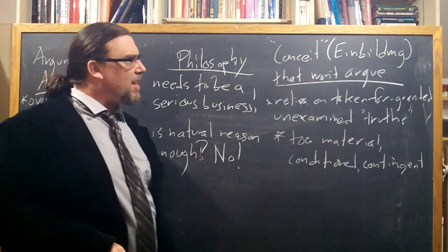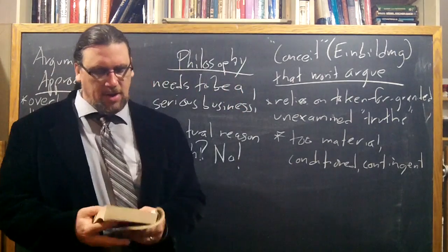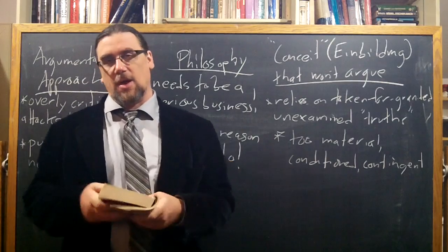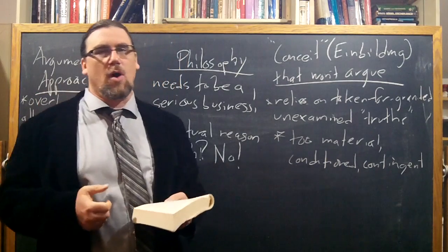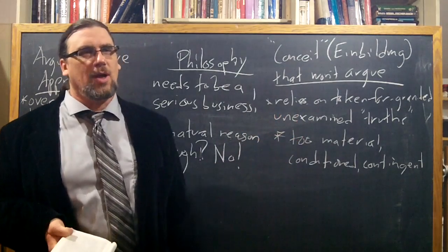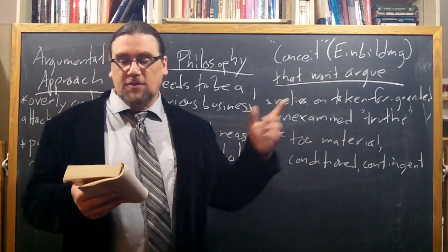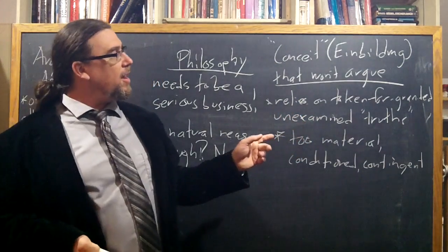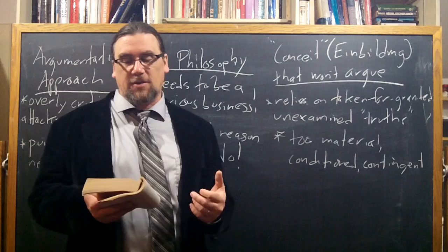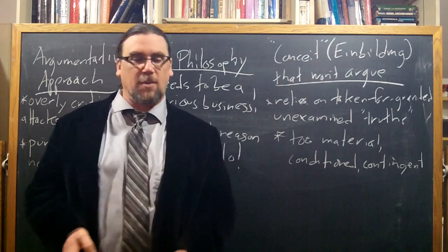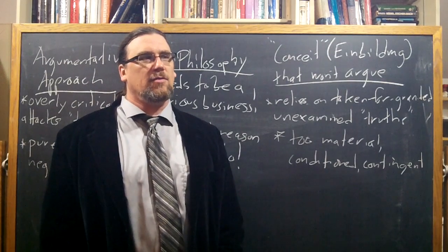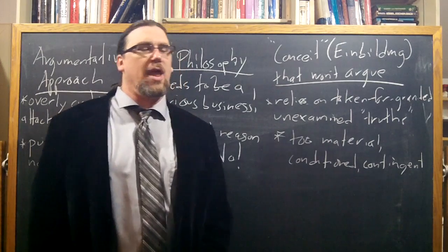Let's look now over here at this Einbildung, this conceit, as Miller is translating it, that will not argue. The study of philosophy is as much hindered by the conceit that will not argue as it is by the argumentative approach that gets things wrong and thinks that because it can argue against things and raise objections that that put an end to the development of the dialectic. This conceit relies on truths which are taken for granted and which it sees no reason to re-examine. It just lays them down and believes itself entitled to assert them, as well to judge and pass sentence by appealing to them.